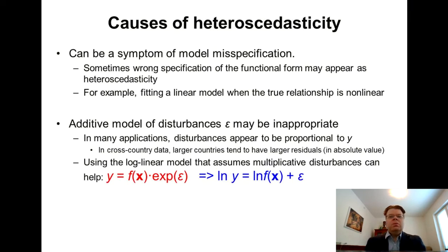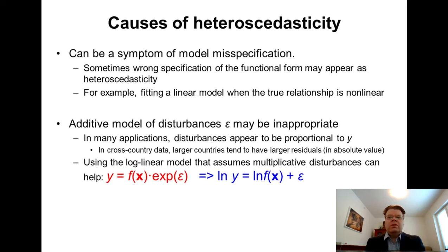What kind of possible causes might there be for heteroscedasticity? In general, there is no particular reason why the variance of the error term should be constant across all observations. But before going to the testing or modeling of heteroscedasticity, it may be good to first rule out some possible model misspecification.